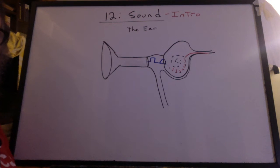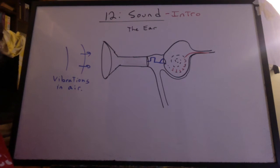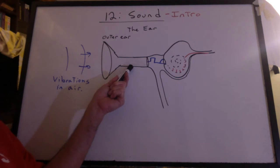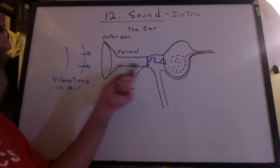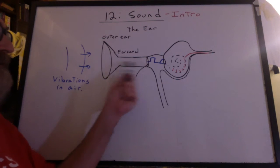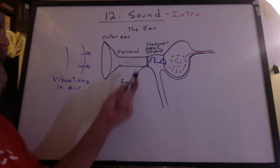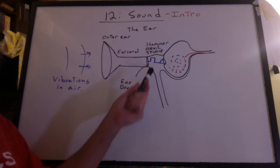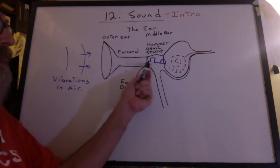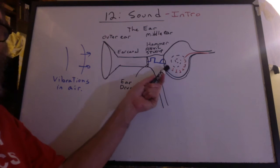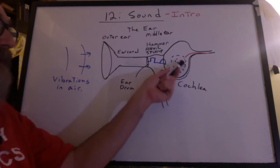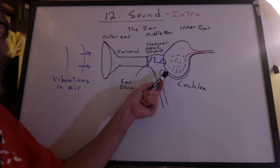Here we have a rather crude diagram of the ear. The vibrations in air approach the outer ear. This acts like a funnel concentrating the energy into the ear canal. The vibrations hit the eardrum, causing it to move back and forth. The eardrum moves the hammer, anvil, and the stirrup, those three little bones. In the middle ear, they move back and forth and press against the fluid-filled cochlea. This is where the nerve endings lie. This is in the inner ear.